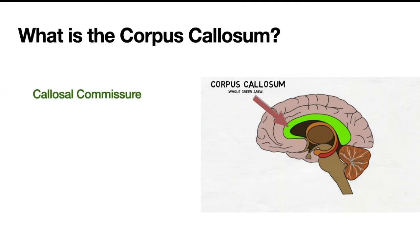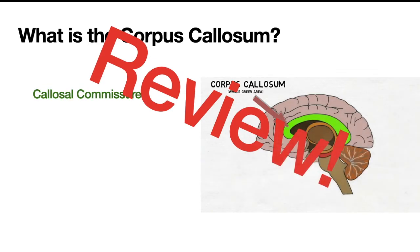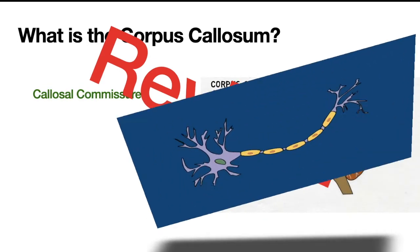Before we talk about the anatomy and the functions of the corpus callosum, I want to do a review of some other stuff. So let's talk about the first thing: the neuron.